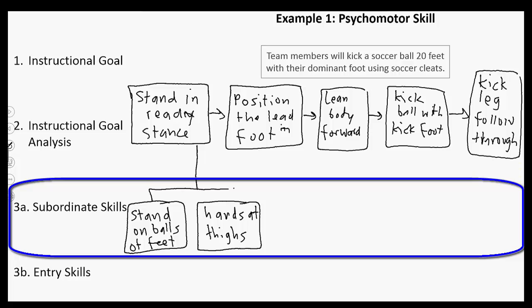For positioning the lead foot: one thing they need to know is how to determine the lead foot. If they don't know which foot they're going to kick with, it's going to be a problem. Our instructional goal says they kick with their dominant foot, so we need them to figure out whether they're left- or right-dominant. They need to determine that lead foot. We could go ahead and break these subordinate skills down even further.